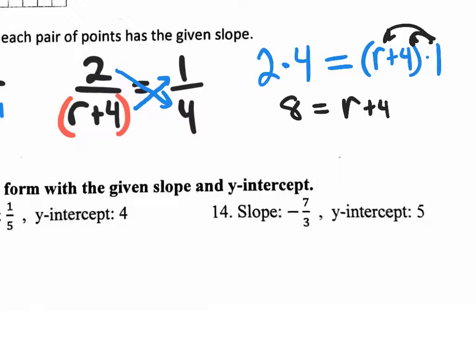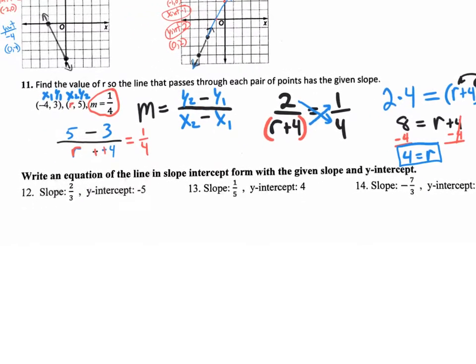We have a simple equation that says 8 equals r plus 4. What do I do next? I subtract 4 to get r by itself. My final answer is 4 equals r. So they were asking for the missing value that would give you slope 1/4 — and that missing value r is 4. If you have a 4 right here and calculate slope, you would get the answer 1/4.